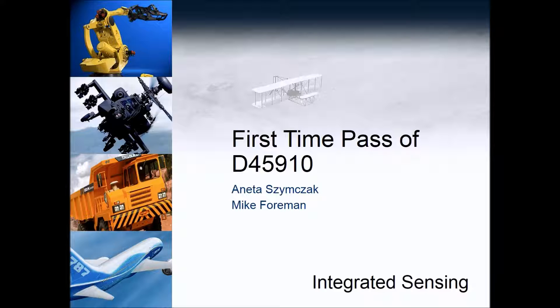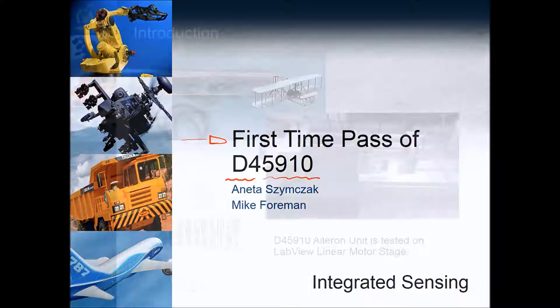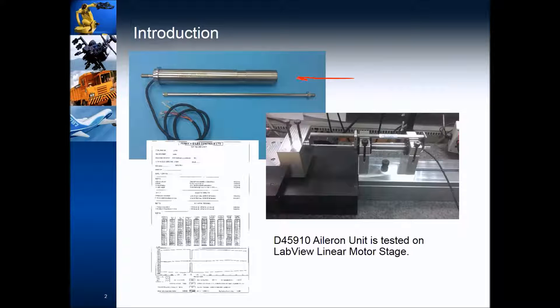So it's all about first-time pass rate for this particular product. Here it is. It's essentially a sensor that fits on an airplane wing and it tells you where the aileron is sitting, where the flap is sitting on the wing. Essentially this rod moves up and down inside a coil and the coil can sense where the end of the rod is. That's the product.